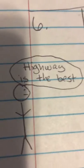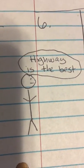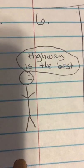Step six, John has to determine a selection. John determines the highway is the best.